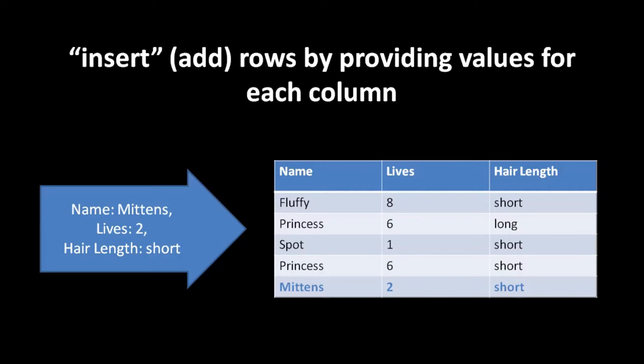We've now covered the core concepts of querying data. When it comes to adding a row to a table, this is called an insert operation. If you want to insert a new row, you have to provide a value for each column. So in our cats table, we're inserting a new row with name 'mittens,' a lives value of two, and hair length short - and now we have a cat named Mittens with two lives and short hair.